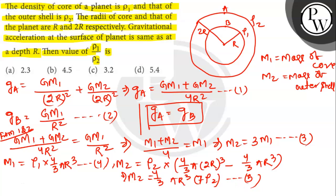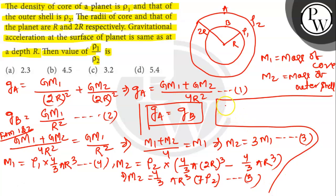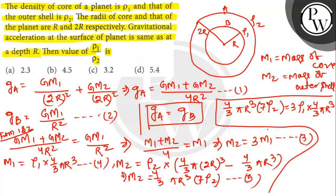Putting equations 4 and 5 into equation 3, and canceling the common factor G(m1+m2)/4r²=Gm1/r², we get: rho1 + 7·rho2 = 3·rho1. Canceling (4/3)π r³ from both sides gives: 7·rho2 = 3·rho1, so rho1 / rho2 = 7/3.